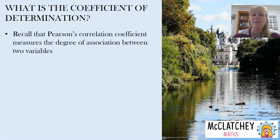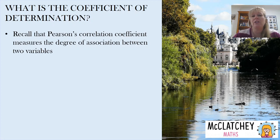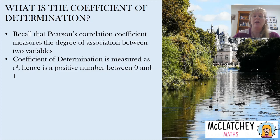Pearson's correlation coefficient or R measures the degree of association or correlation or relationship between two different variables. Pearson's correlation coefficient talks about the strength of association as well as the direction. The coefficient of determination is measured as R squared.